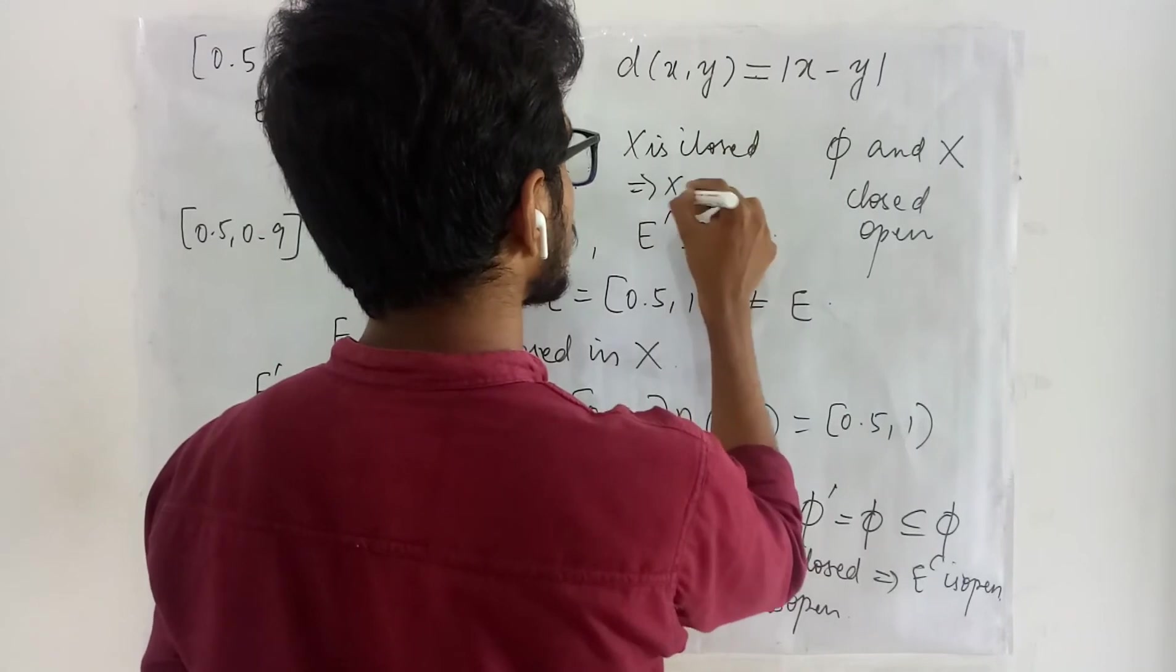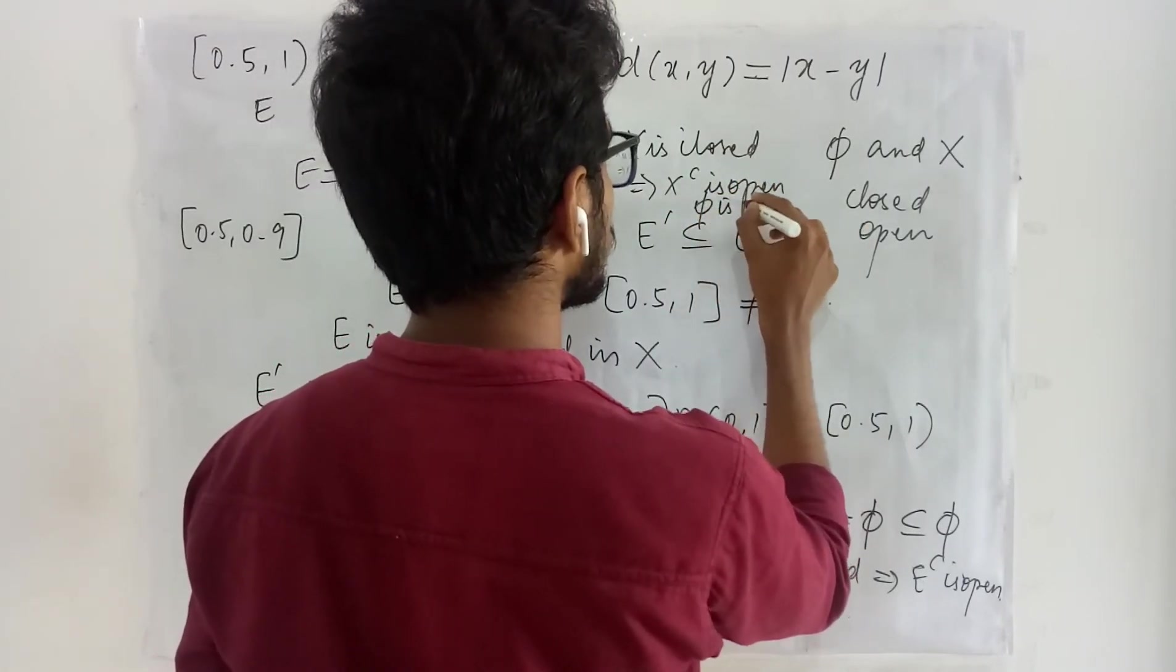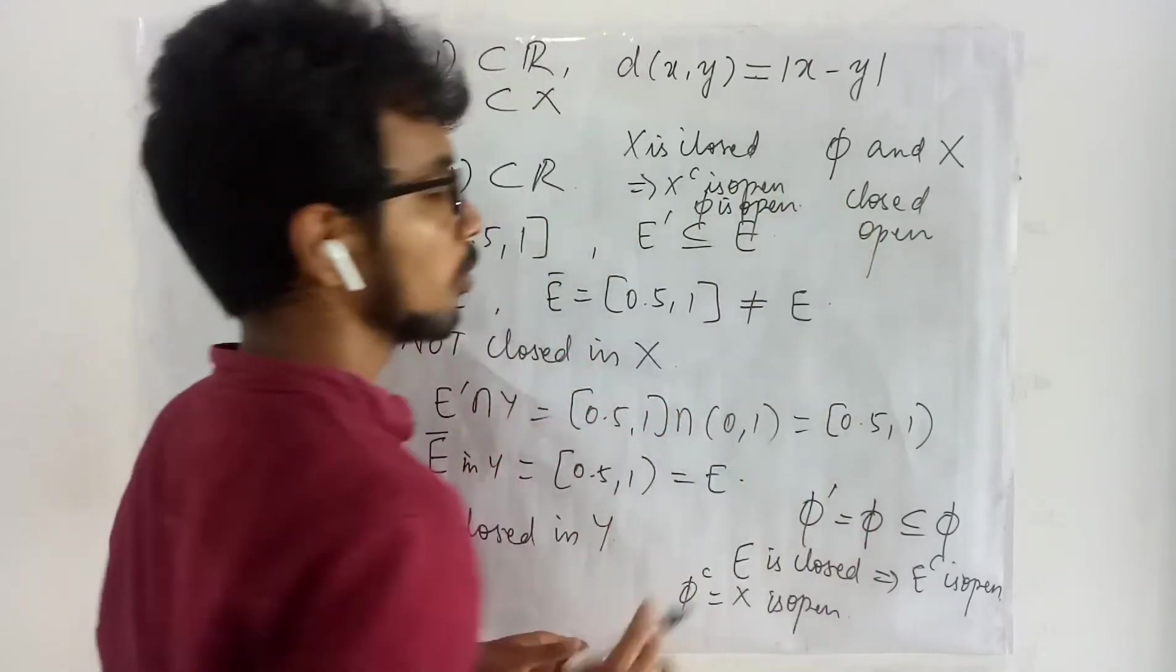If X is closed X complement is open. What is X complement? It is empty set. So empty set is open.